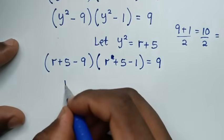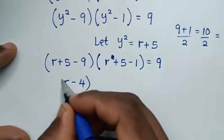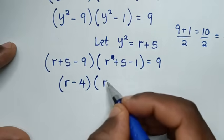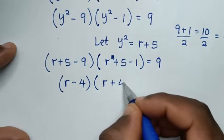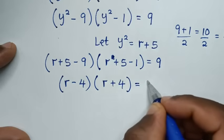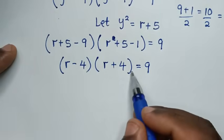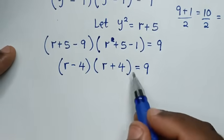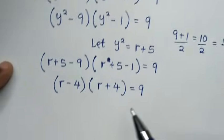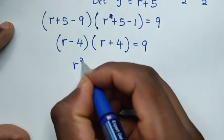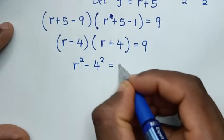This is again a difference of two squares form, so (r−4)(r+4) = r²−16 = 9.